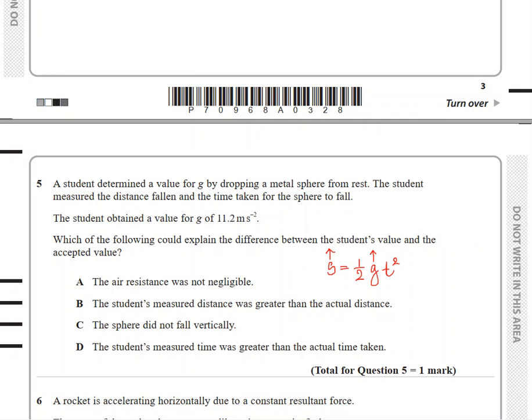When you look at this question, the value in the question says you get a larger value of g. A larger value of g means the distance that you had measured must have been greater. The student's measured distance was greater than the actual distance. Answer is B.